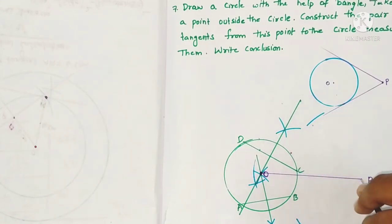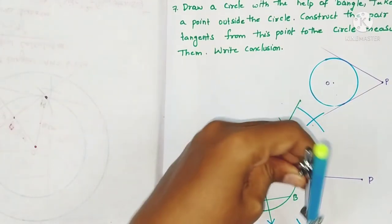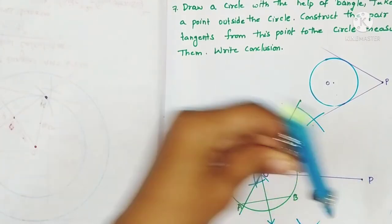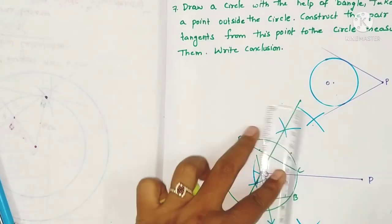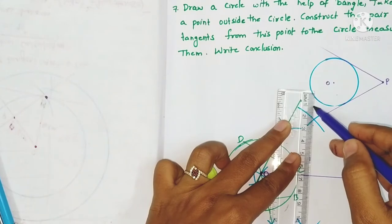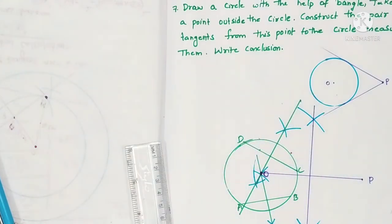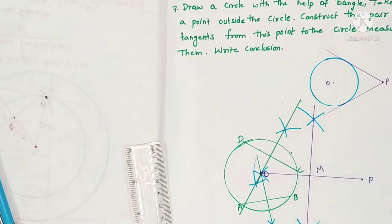Draw arcs from both sides of line OP, and similarly from O as well. Join the intersection points with the scale. This is the perpendicular bisector of OP and it intersects at M.